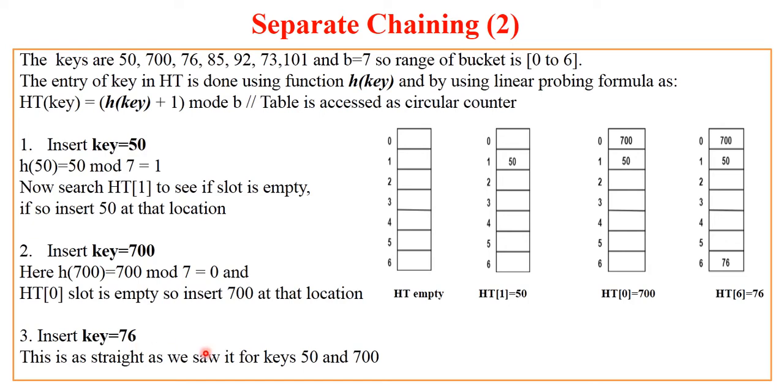76 will give remainder 6, and as there is nothing over here at hash address 6, we store 76 at hash table index 6. So this way we have inserted the three keys.